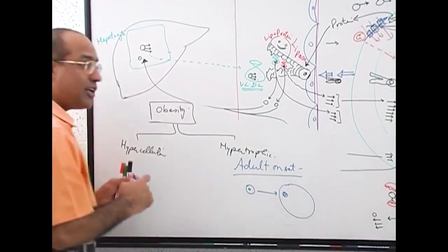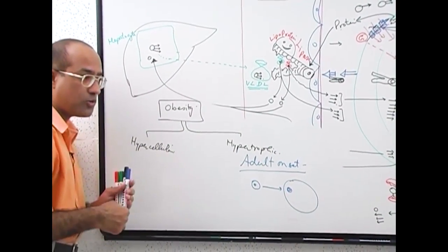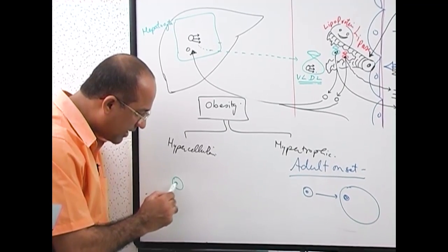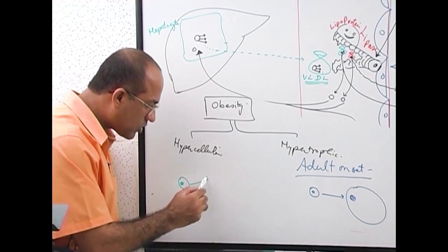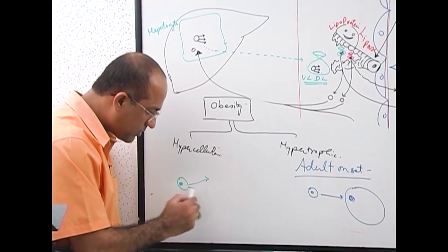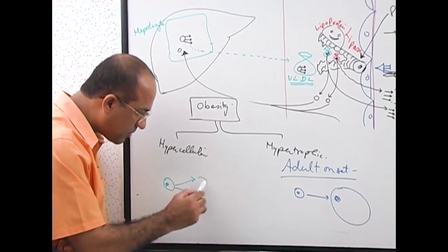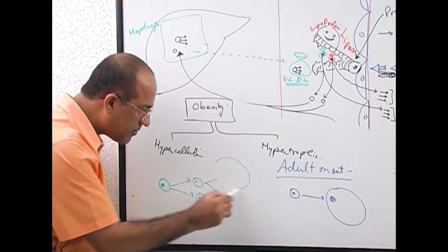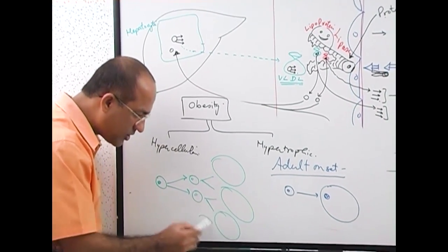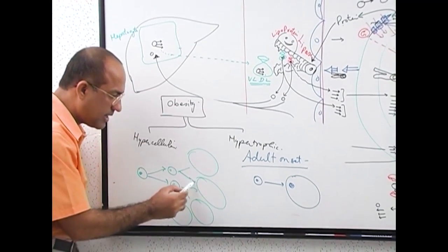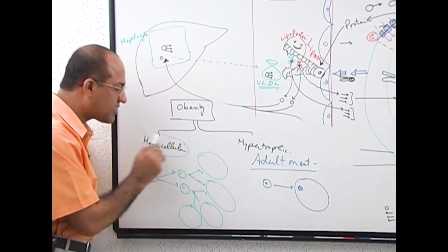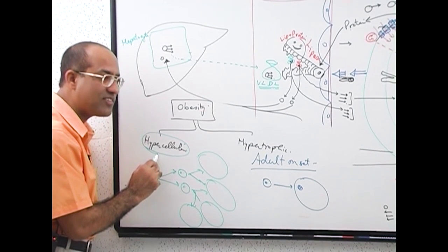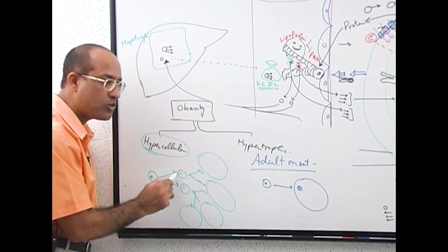But early onset, child onset obesity — there is a small fat cell, and if you are overfeeding, not only will this cell first multiply into many cells, but eventually they will become very, very large. This is called hypercellular. The number of cells is increasing — hypercellular obesity.